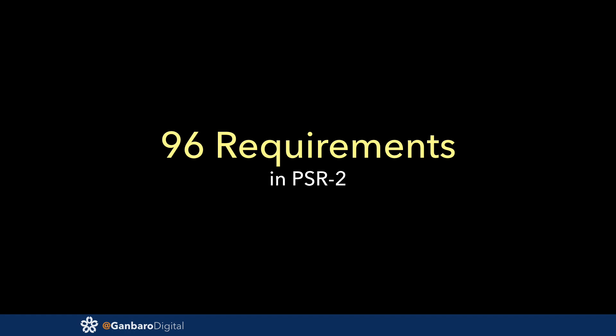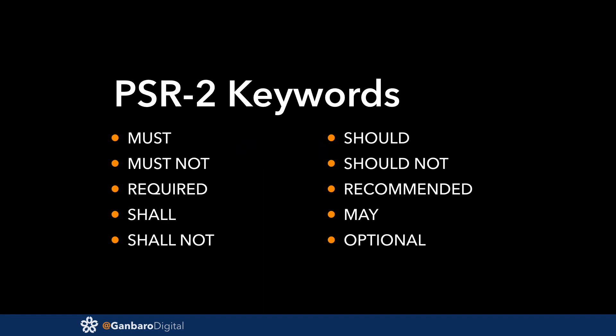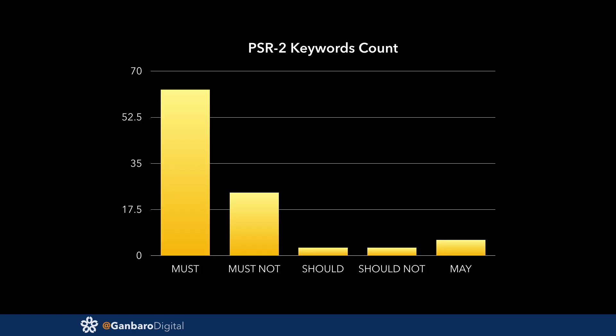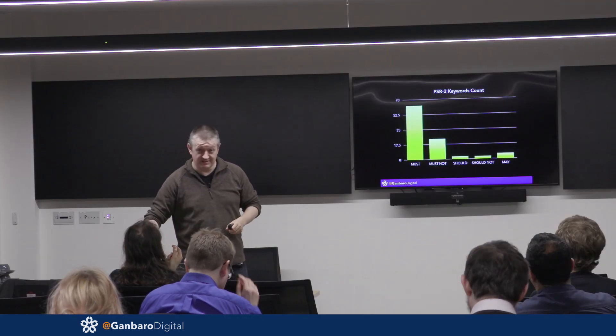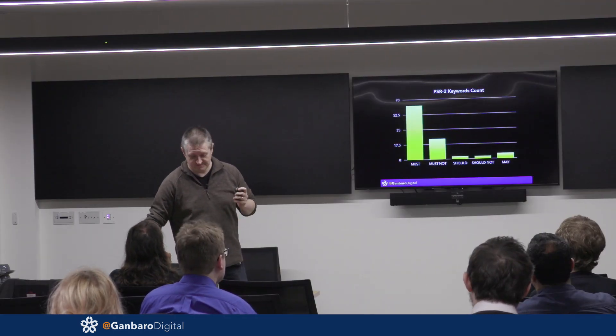I should double-check that figure, but I've got 96 in my slides. PSR2 uses keywords like a lot of internet standards do, and you can go around and add all these up to see how many are used. Only five of these keywords are actually used in the body of the text, and they are distributed like this. So PSR2 is mostly mandatory — there's a little bit of wiggle room here and there, but not much.